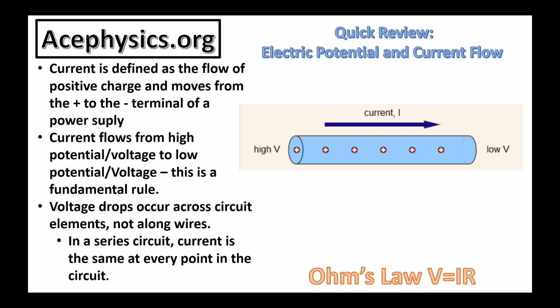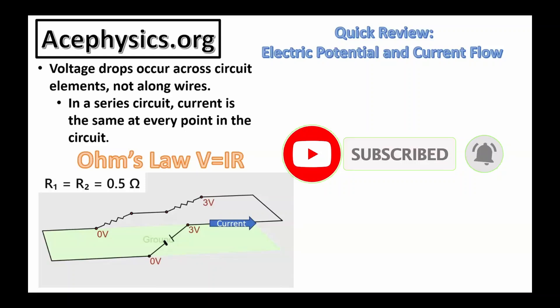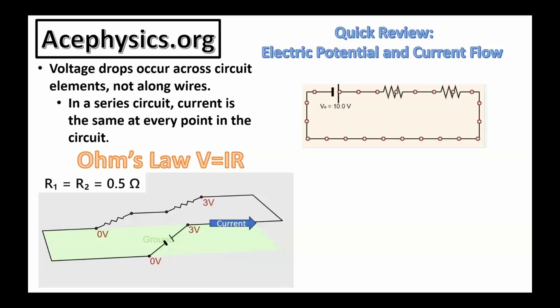Before diving in, it's important to have a solid grasp of voltage and current. The key fundamentals to remember are that current is the flow of positive charge and always moves from high to low voltage. Current flows from high potential to low potential — a fundamental principle of DC circuits. Current is defined as the flow of positive charge, moving from the positive to the negative terminal of the battery. In a DC resistive circuit, charge redistributes almost instantly, creating strong electric fields inside the resistors. These fields drive a steady current, with charges losing energy as heat. Voltage drops occur across resistors, not wires, and the total battery voltage equals the sum of all voltage drops across the resistors.